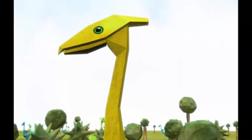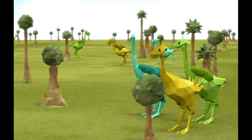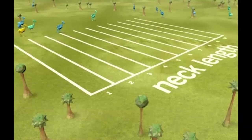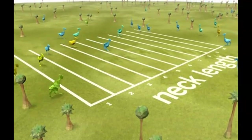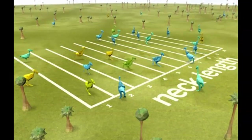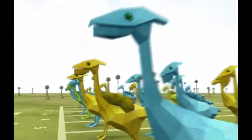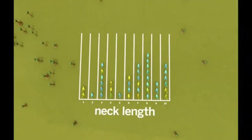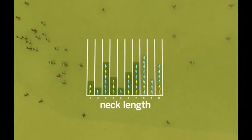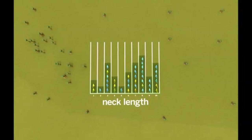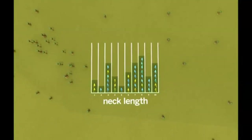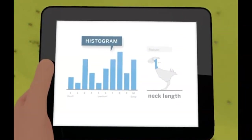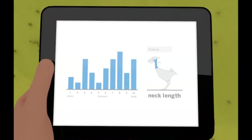The ostrilopes vary in color from yellow to green to blue, they have different amounts of fur, and their necks range from very short to very long — these are examples of variation in the ostrilope population. If the population is broken into groups according to a single feature, such as neck length, and they line up by how long their necks are, we can see how many individuals have short, medium, long, and very long necks. The lines of organisms are like bars in a graph.